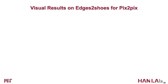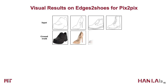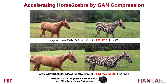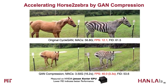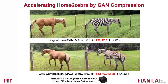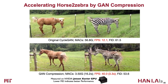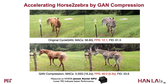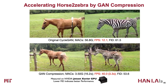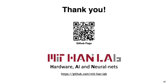Here are the Pix2Pix results on the edge-to-shoes dataset. Again, our method compresses Pix2Pix with minor performance degradation. GAN Compression reduces the computation of CycleGAN by 16.2 times, achieving 40fps on Jetson Xavier — 3.3 times faster than the original model while fully maintaining image quality. Our code is released on GitHub. Thank you for your attention.